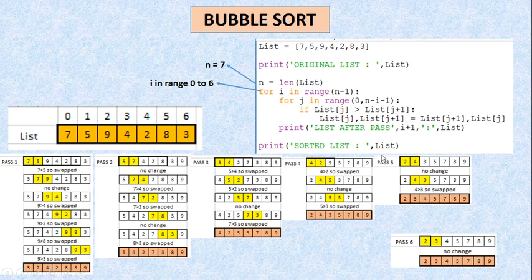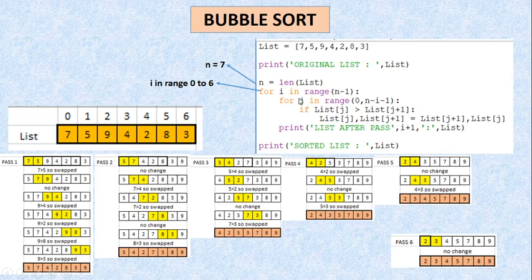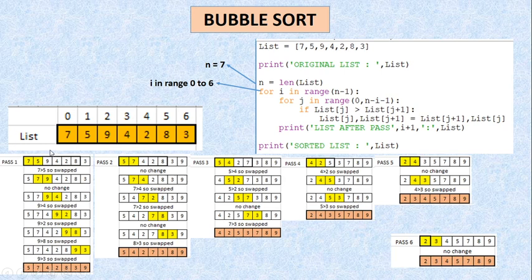अब यहाँ समझने वाली बात यह है — जो मेरी list का actual size है, total number of passes उससे minus 1 होते हैं। मतलब list की length 7 थी, तो total 6 passes चले। And in every pass, one element is bubbled out at its correct location। और जो मैं pass के अंदर iterations चला रही हूँ, वो number of pass minus 1 तक हैं — initially 5 index तक, फिर 4, फिर 3, फिर 2, फिर 1, and finally सिर्फ 0 index के लिए।